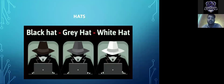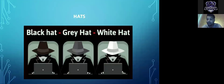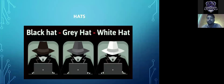Gray hat hackers do both illegal and legal things. For example, an Indian gray hat might attack Pakistani government websites, leak or delete their databases — which is illegal — but for their own country, they will test security, find vulnerabilities, make a report, send it to the admin, and help the developer increase security.